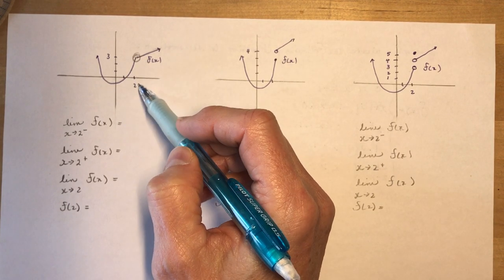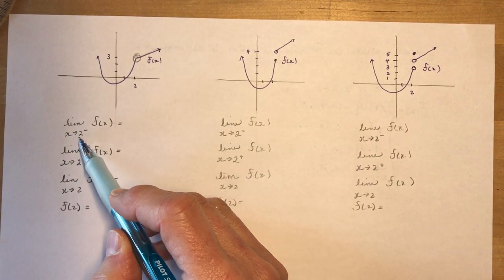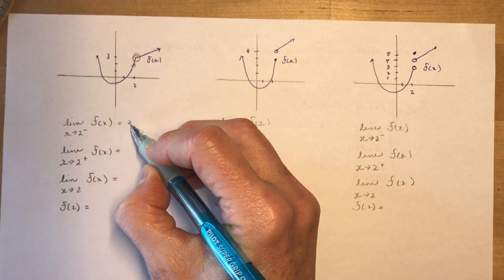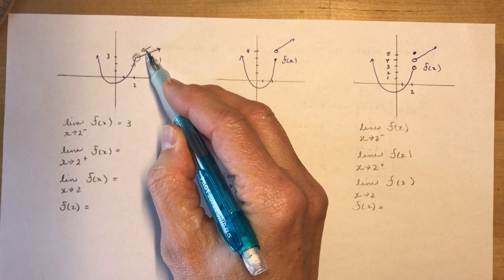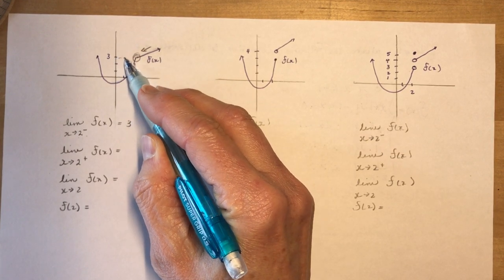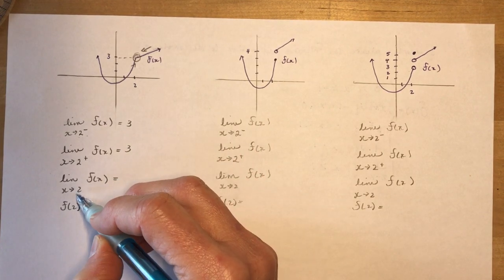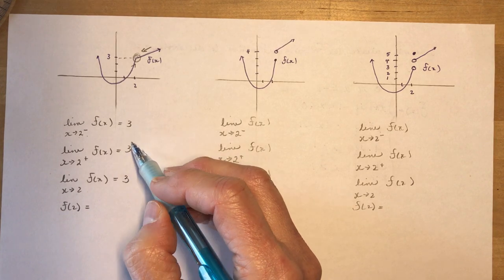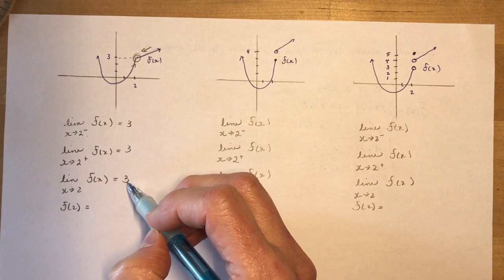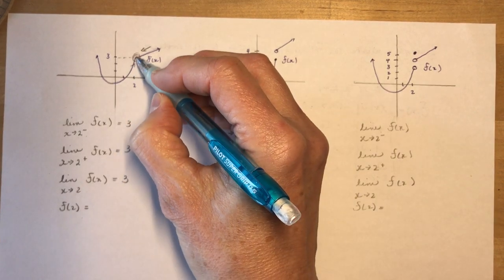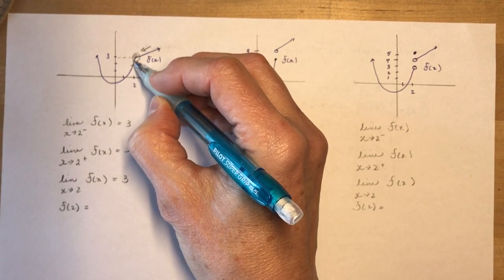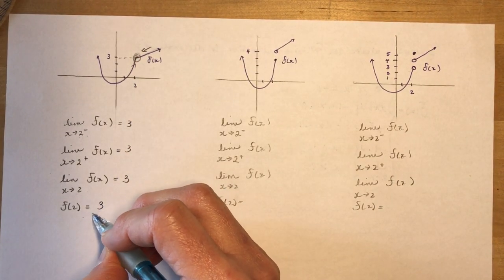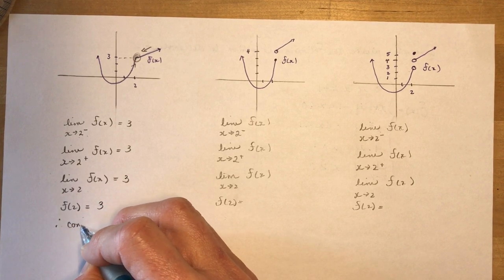I'll do a long example of this at the end of the lesson. The limit as x approaches 2 from the left gives 3, and approaching from the right also gives 3. So the limit as x approaches 2 is 3, because the limit from the left equals the limit from the right. The function has a point there with no holes, so f(2) equals 3 — meaning it is continuous at x equals 2.